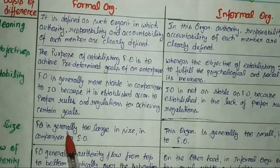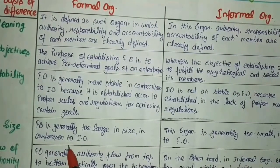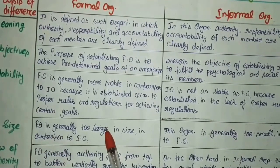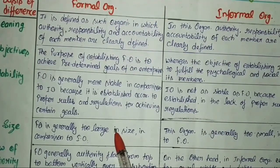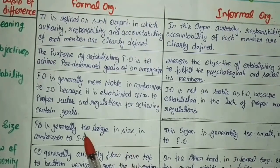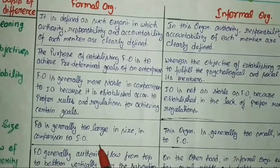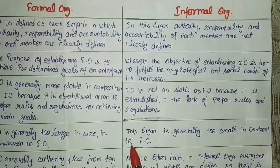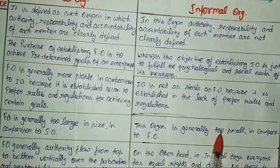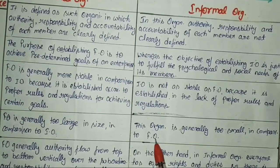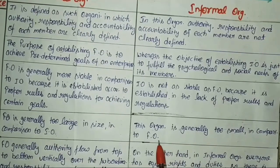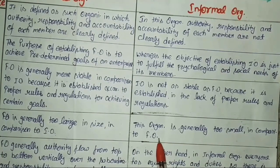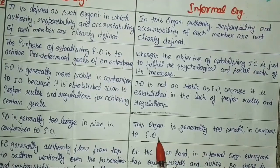Regarding size: formal organization is generally too large in size in comparison to informal organization. Formal organization operates at a very large level according to the company's objectives and goals — it has many employees, managers, superiors and subordinates, making its size very large. Informal organization is generally too small in size in comparison to formal organization. Since informal organization is a part of formal organization and is created among the employees working within it, it exists at a smaller level.